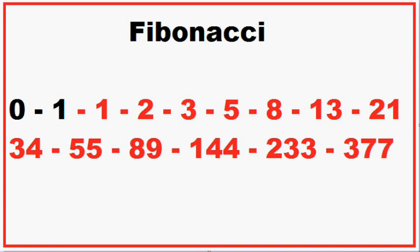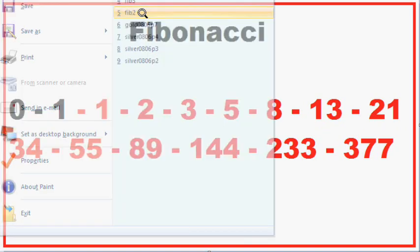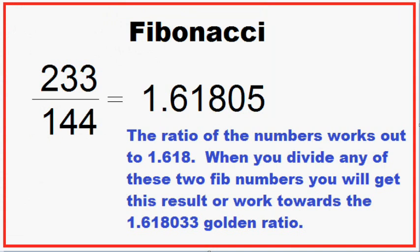Apparently this Fibonacci sequence is nature's ratio. The ratio is one number divided by its previous one, where you can find these Fibonacci ratios available within the spiral of the galaxy, in so many plant life, and obviously in the stock market too. To get the golden ratio of 1.618033, you take a number divided by its previous one, and it will eventually work its way towards 1.618033.